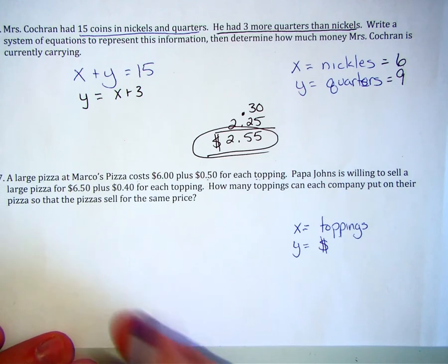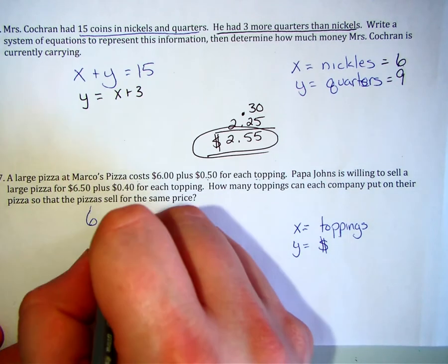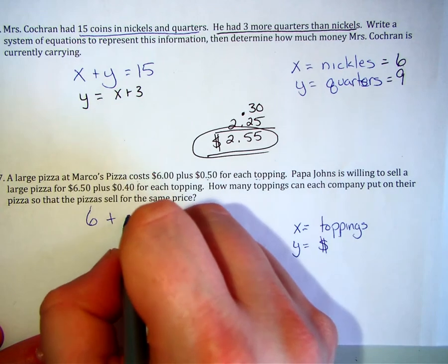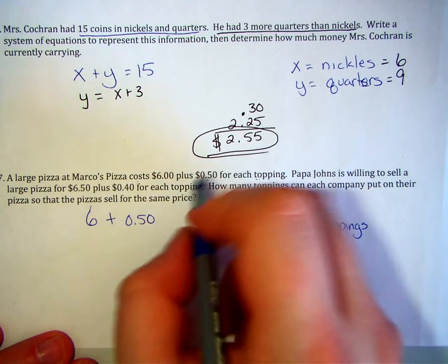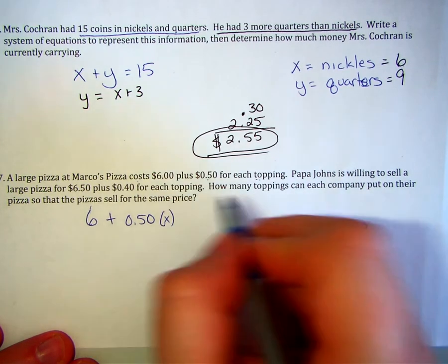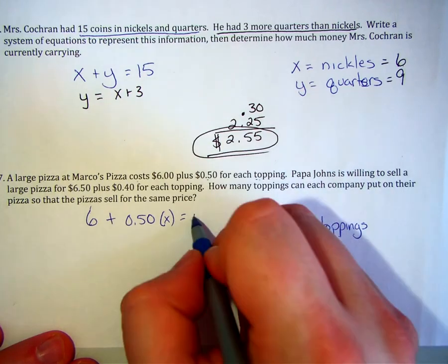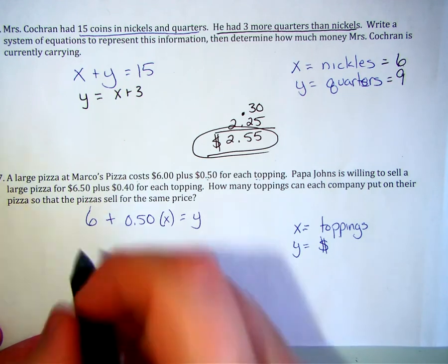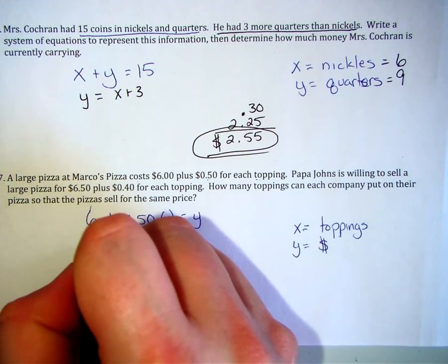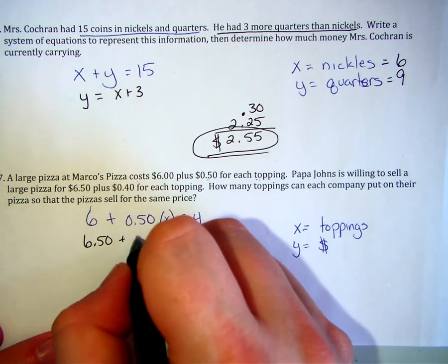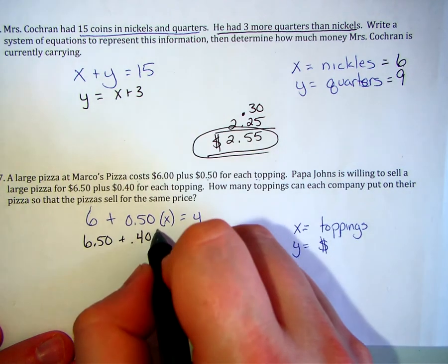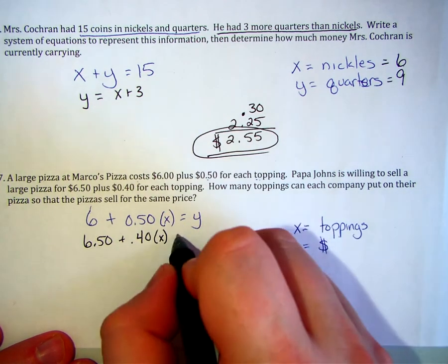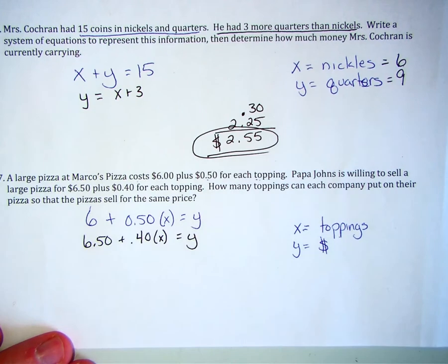And now we set up an equation. Six dollars plus 50 cents for each topping is going to give me a total cost. Papa John's, however, sells for 6.50. Plus, they only charge me 40 cents for each topping, and that will equal their total cost.